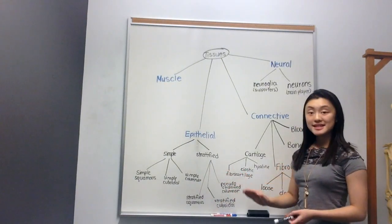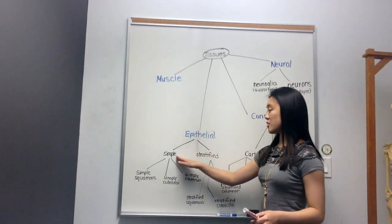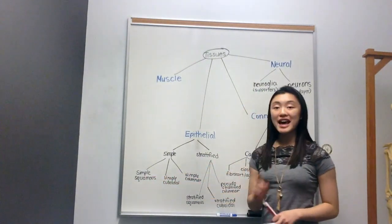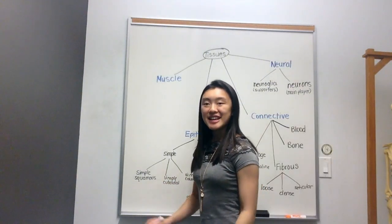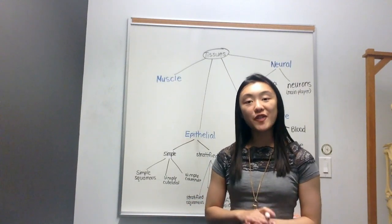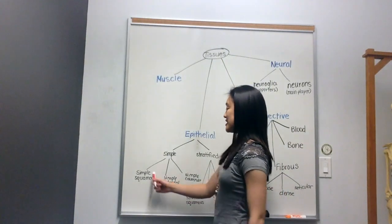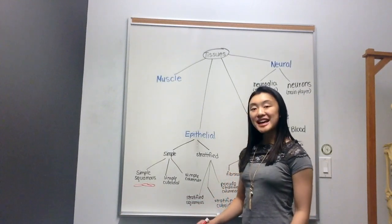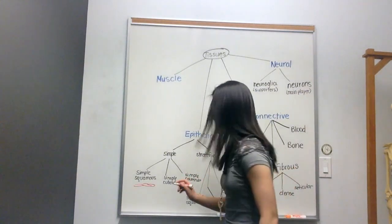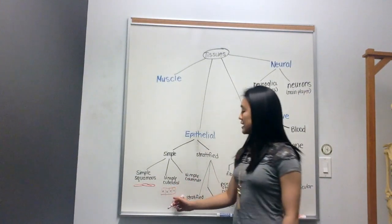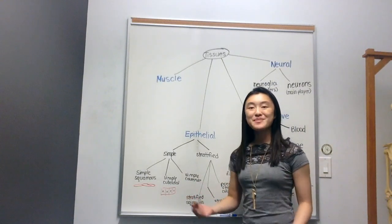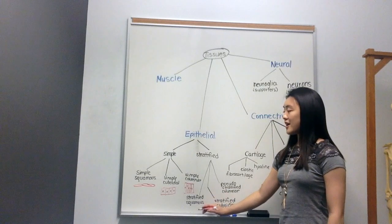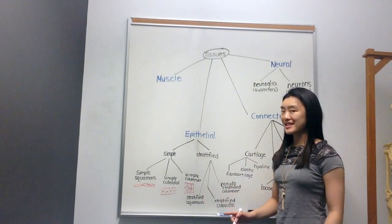Let's talk about each type and draw a picture. All simple types have one layer of cells. Squamous — I think of the word 'scales,' like scales on a fish, which are very flat. So simple squamous means one flat cell layer. Simple cuboidal means cube-shaped cells, one layer thick. Simple columnar means one layer of tall, elongated cells like columns.